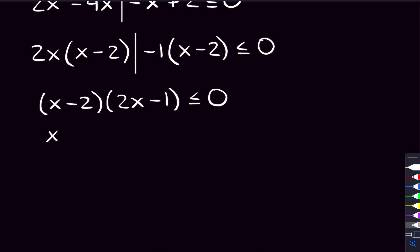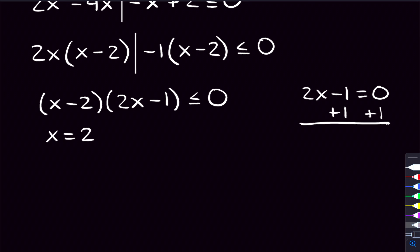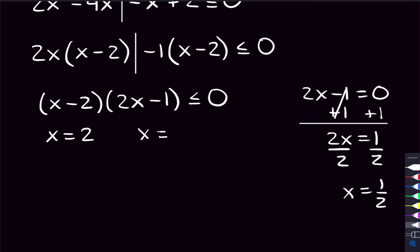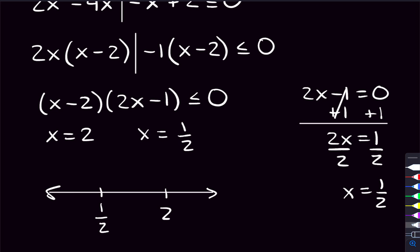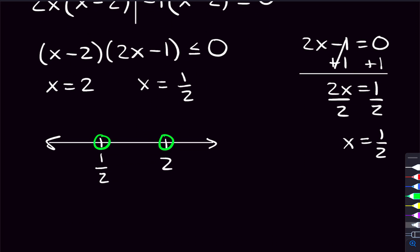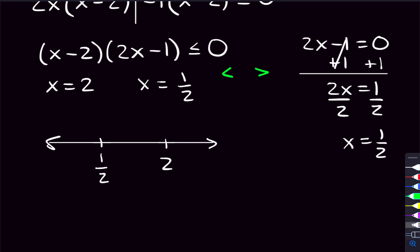So from here you can see what our zeros are going to be. From the (x minus 2) factor, we get x equals two. For the (2x minus 1) factor, set 2x minus one equal to zero, add one on both sides to get 2x equals one, then divide by two to get x equals one half. We put those on a number line: one half and two. Now, do we use open or closed circles? Looking at our inequality — less than or equal to zero — we do care where this quadratic equals zero, so we use closed circles.